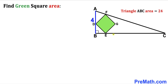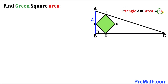Welcome to pre-math. In this video we have got a green square DEFG fully confined in a right triangle ABC, such that the side length AB of this right triangle is 4 units and the area of triangle ABC has been given as 24 square units. Moreover, points D, E, and F of the green square lie on triangle ABC, and our task is to calculate the area of the green shaded square DEFG.